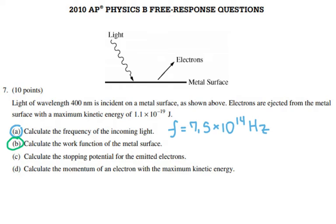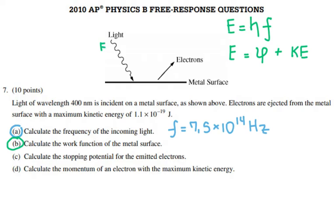For the next question, they ask you to calculate the work function of the metal. Because we know the wavelength of the incoming waves, we can figure out the energy the photons carry before they reach the metal. The energy of the incoming photons equals Planck's constant times the frequency. That energy equals the work function plus the kinetic energy left after the electrons are emitted. The photons come in with initial energy, some is used to rip electrons off the surface — that is the work function — and the remainder is carried by the electrons as kinetic energy.